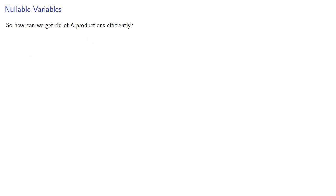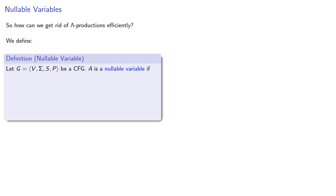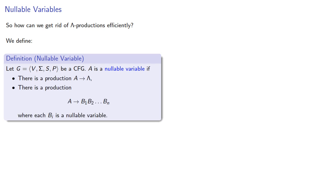So how can we get rid of the lambda productions efficiently? We make the following definition. Let G be a context-free grammar. A is a nullable variable if either there is a production A produces lambda, or there is a production A produces a string where each variable is a nullable variable.